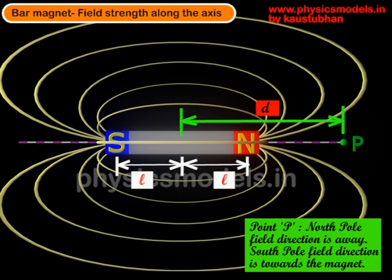And then we plug in some dimensions. The point P is at a distance small d from the center of the magnet, and each of the poles, the north pole and the south pole, is located at a distance small l from the center of the magnet. These are the magnetic lengths, and you will notice that we are not talking about the total length of the magnet.